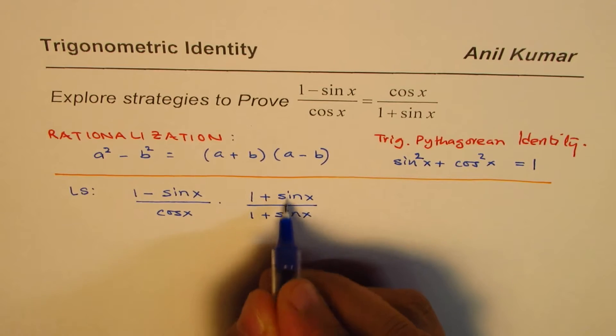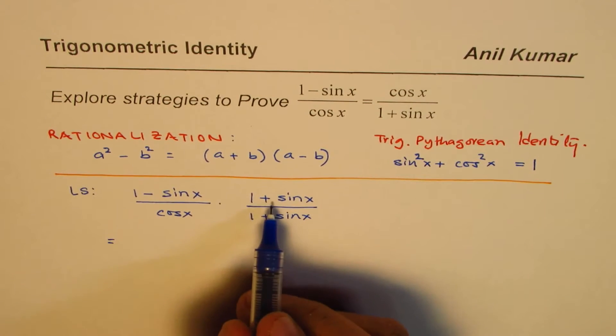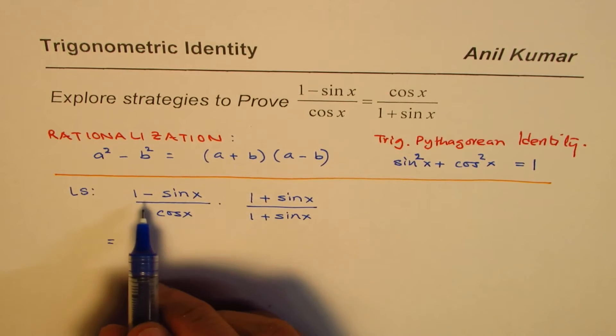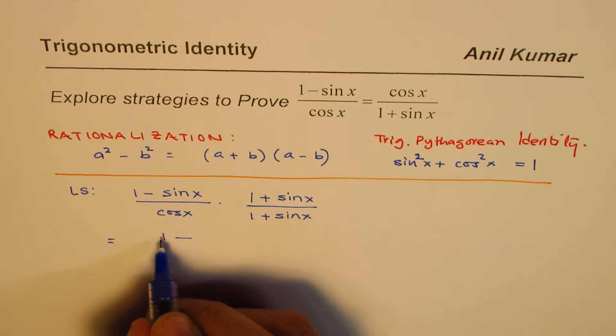Now when you multiply (a - b) times (a + b), you get a² - b², which in this case is 1² - sin²x, which equals 1 - sin²x.